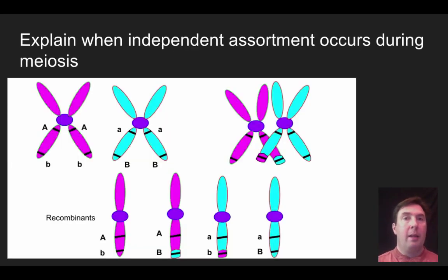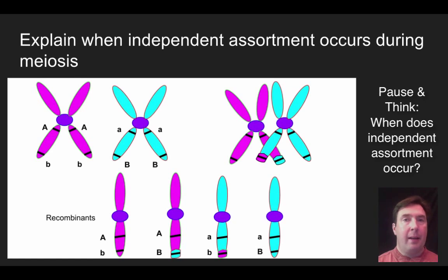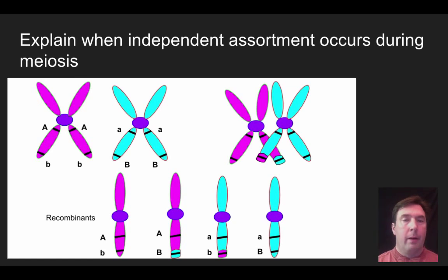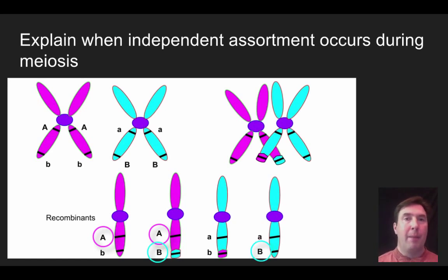Now let's think about independent assortment. When does independent assortment occur? Pause and think. Independent assortment is the fact that the big A is going to assort independently of the big B, and there's an equal chance that you'll get a big A and a big B, or a big A and a little b when you end up having the gametes.